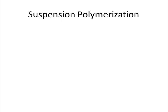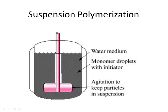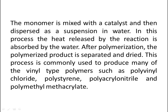Now let's talk about suspension polymerization. The figure shows a similar setup, with a water medium, monomer droplets with initiator, and an agitator whose function is to keep particles in suspension. In this process, the monomer is mixed with a catalyst and then dispersed as a suspension in water. The heat released by the reaction is absorbed by the water. After polymerization, the polymerized product is separated and dried.